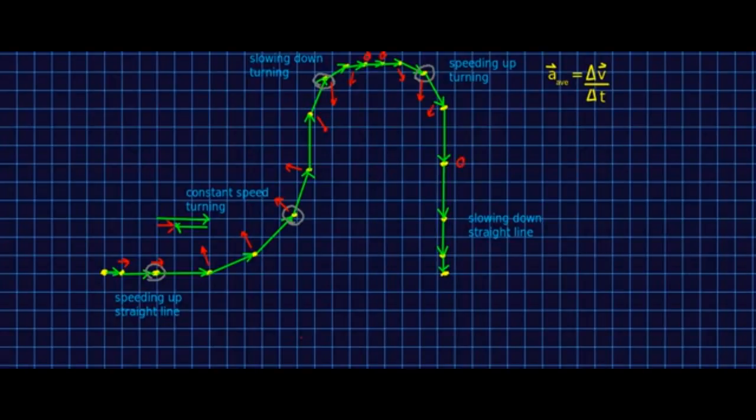And then here, if you do the same thing as I did over here, you'll see that this works out just the way we know it should. That when it's slowing down, going in a straight line, the acceleration should point back. And there we go. Our fully done motion diagram with acceleration vectors on it.